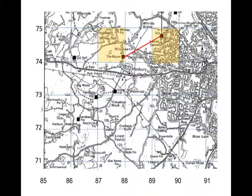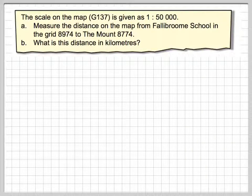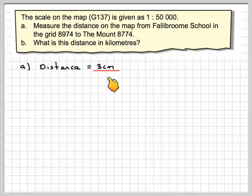If we join them up with a ruler, what we've got to find is the distance between the two. So if we take a ruler and measure that, I can measure that to be 3 centimeters. So the distance on the map is 3 centimeters.